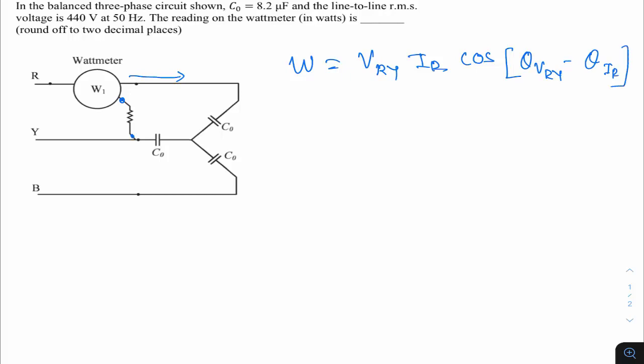The wattmeter reads V_RY × I_R × cos(θ_VRY − θ_IR). Only R and Y lines are involved; the B line is not involved. V_RY is the line-to-line voltage = 440 V (RMS). I_R is the line current.